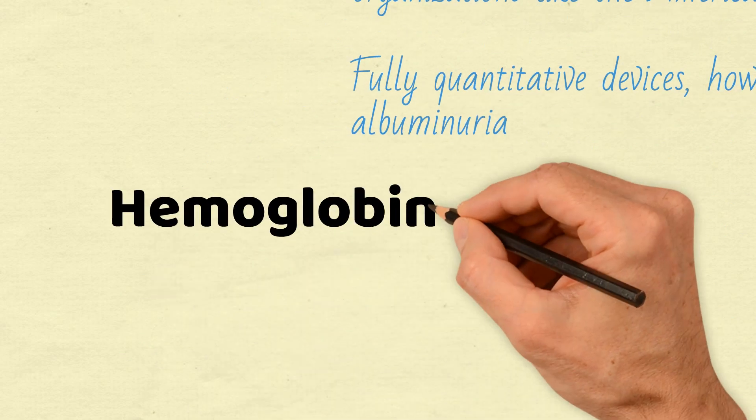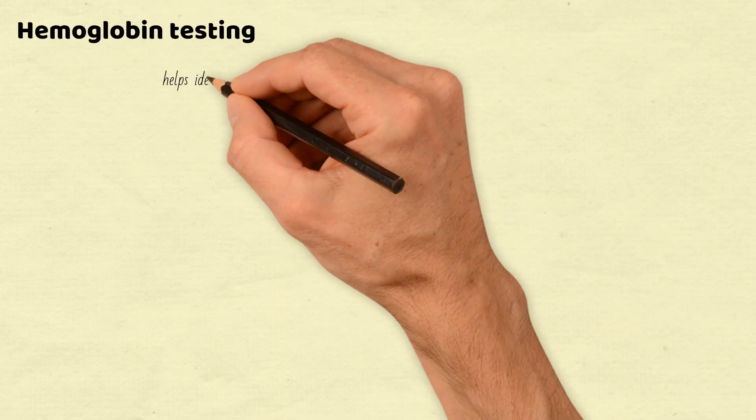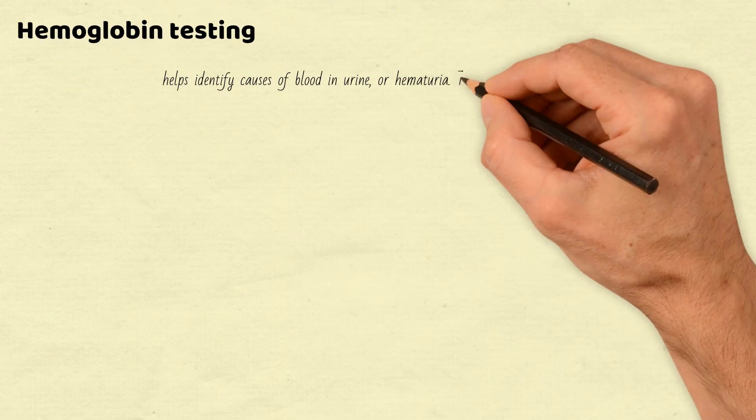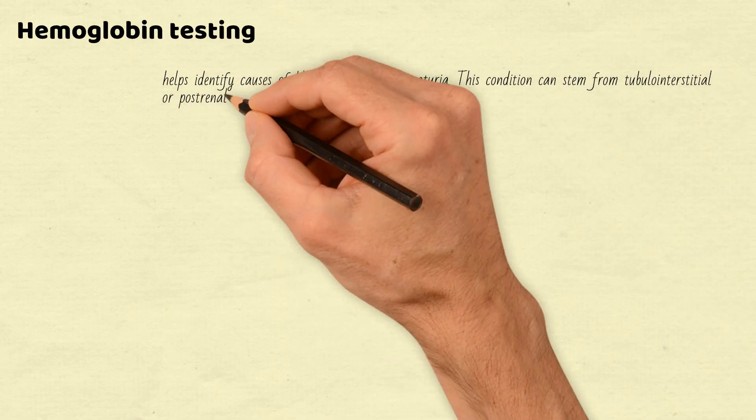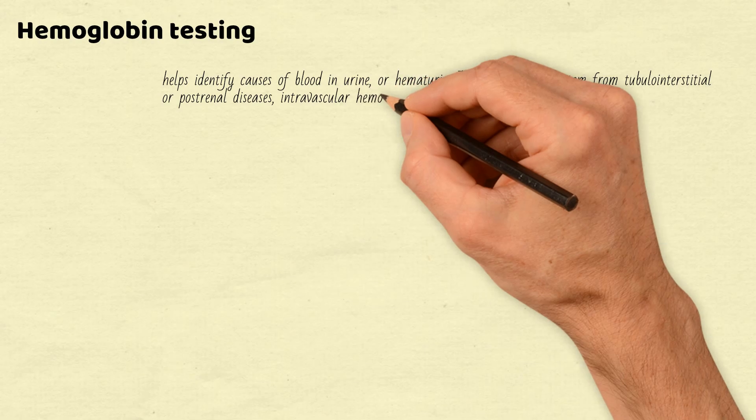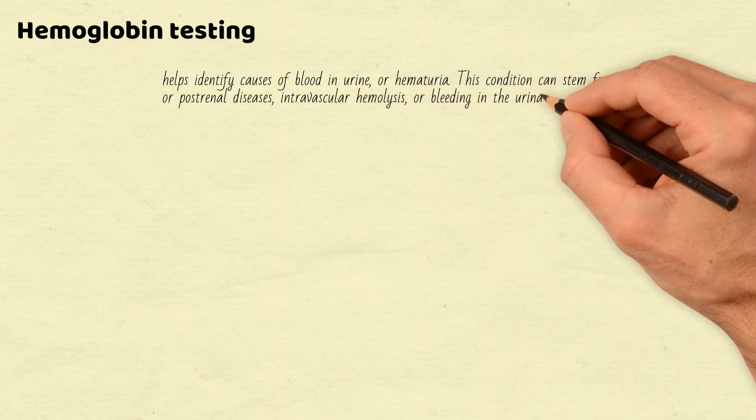Next, let's look at hemoglobin testing, which helps identify causes of blood in urine, or hematuria. This condition can stem from tubulointerstitial or post-renal diseases, intravascular hemolysis, or bleeding in the urinary tract.